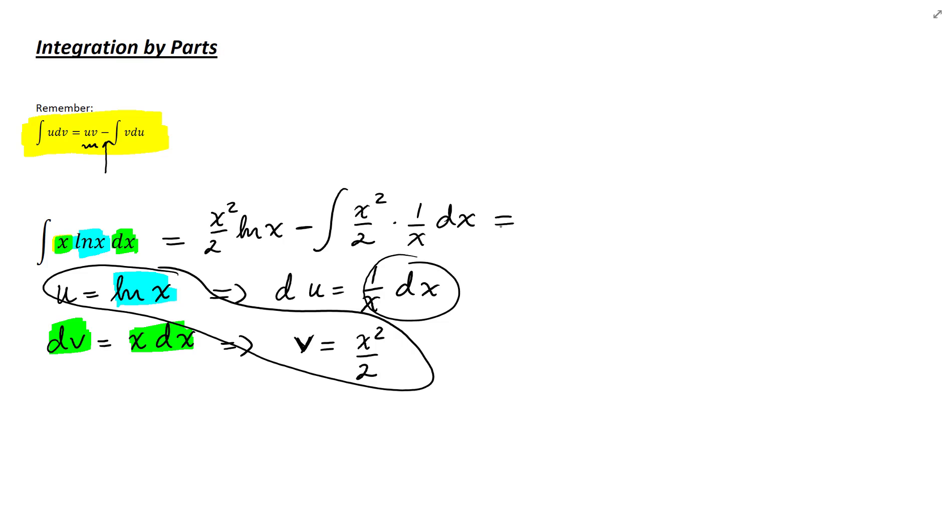Here we still have this integral to compute. We have x squared over 2 ln x minus, x squared cancels with x and we are left with an x. 1 over 2 comes in front of the integral because it's a constant and we have integral of x dx. From an integral having ln inside, which we couldn't compute, using integration by parts we were able to get the basic integral, integral of x dx.